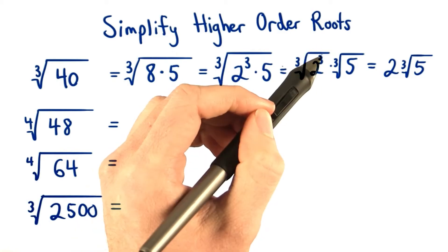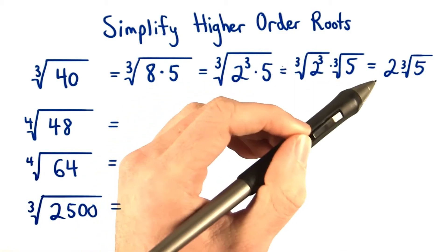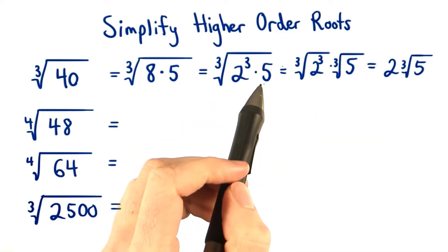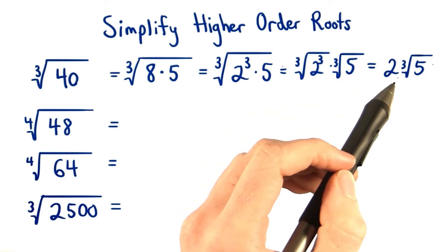This also goes in line with our thinking of power divided by root. 3 divided by 3 equals 1, so we just have 2 to the 1. We can't simplify the 5, so that stays inside of its cube root, and we have that multiplied on the end with our answer: 2 times the cube root of 5.